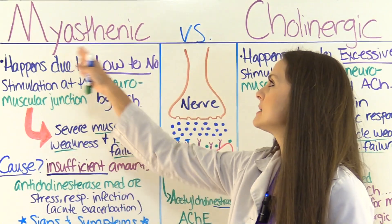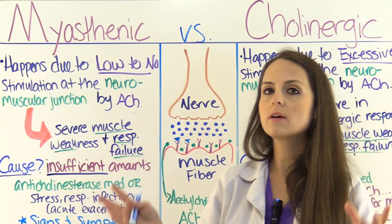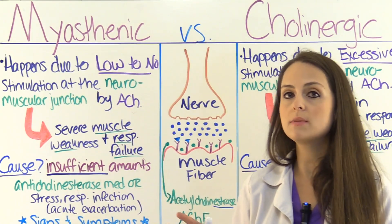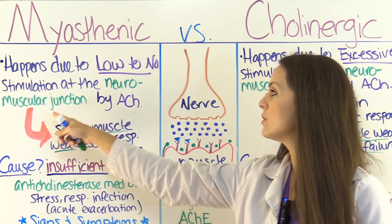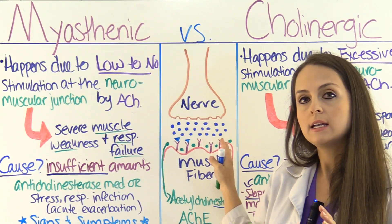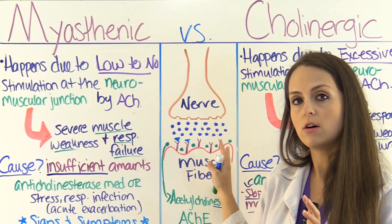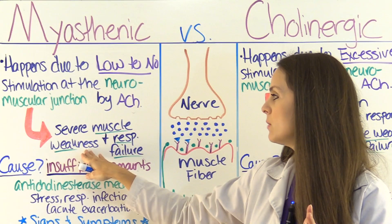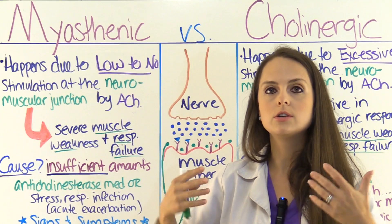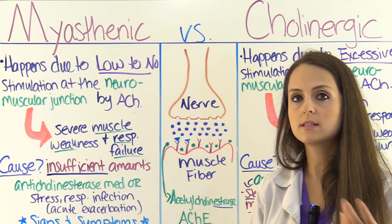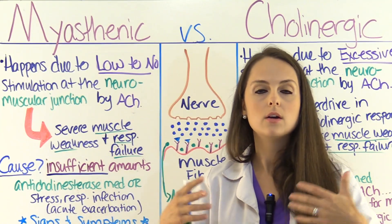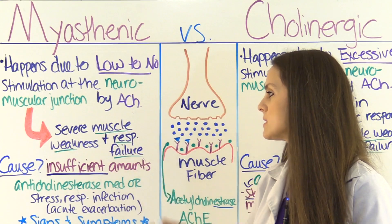Now let's look at myasthenic crisis. This happens due to low to absolutely no stimulation at the neuromuscular junction by acetylcholine — no acetylcholine is getting to these receptors at all. So we're going to get severe muscle weakness, which is going to lead to respiratory failure. Because breathing requires voluntary muscles, and myasthenia gravis affects voluntary muscles in the face, the throat, and the respiratory system, so they can get respiratory failure.